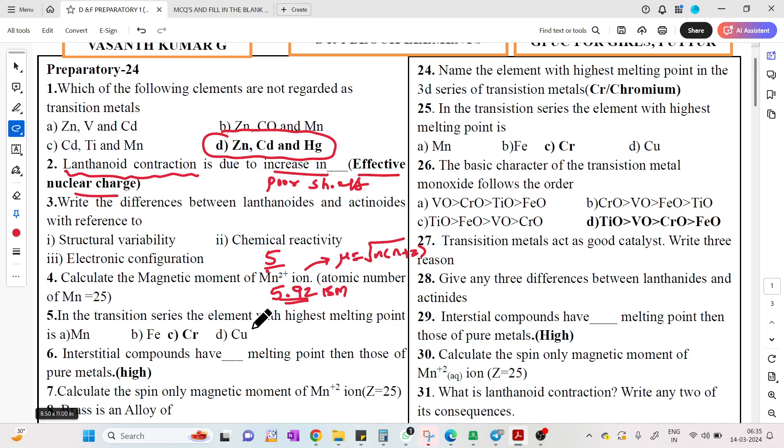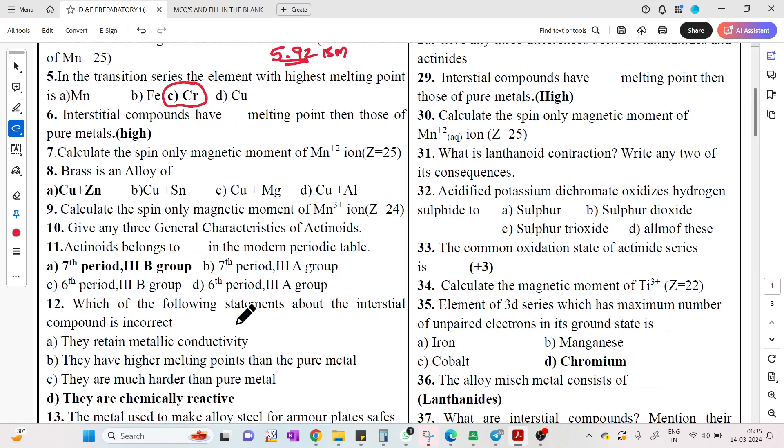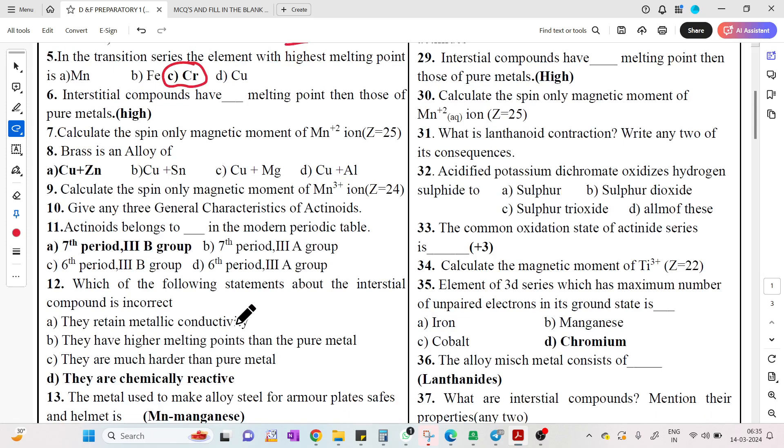In the transition series, the element with the highest melting point: the highest melting point will be chromium among these. Remember, chromium has the highest melting point because of higher unpaired electrons.